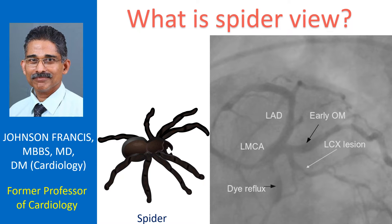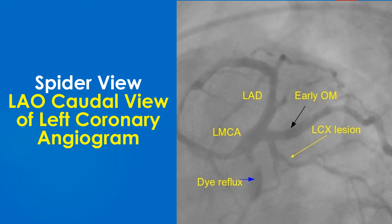The left anterior oblique caudal view of left coronary angiogram resembles a spider, hence the term 'spider view.' A cineangiogram is included in this topic. Spider view is useful in delineating the left main coronary artery and the proximal region of major branches. It is often the first view taken during coronary angiography, especially when left main disease is suspected.